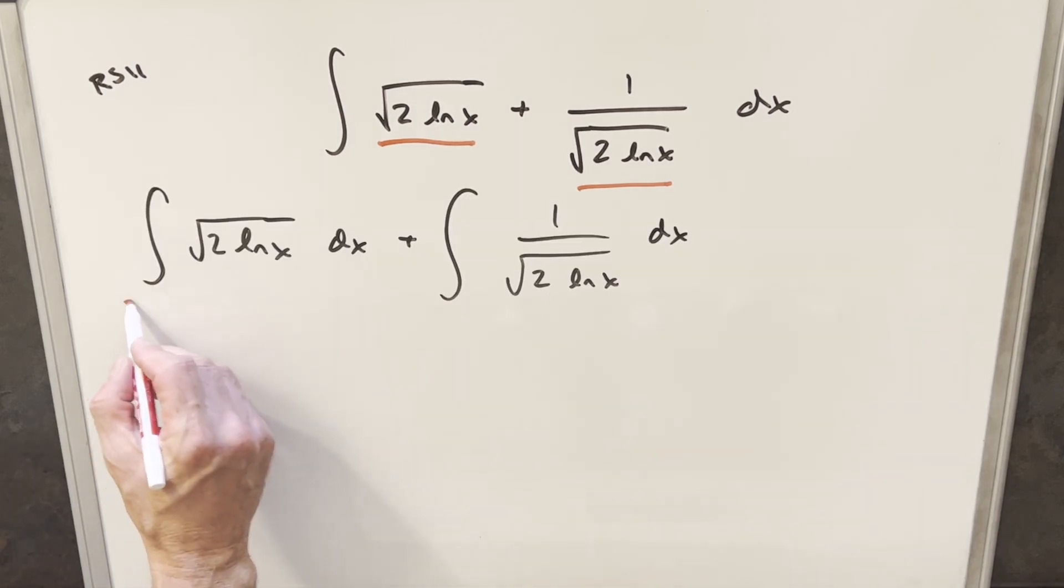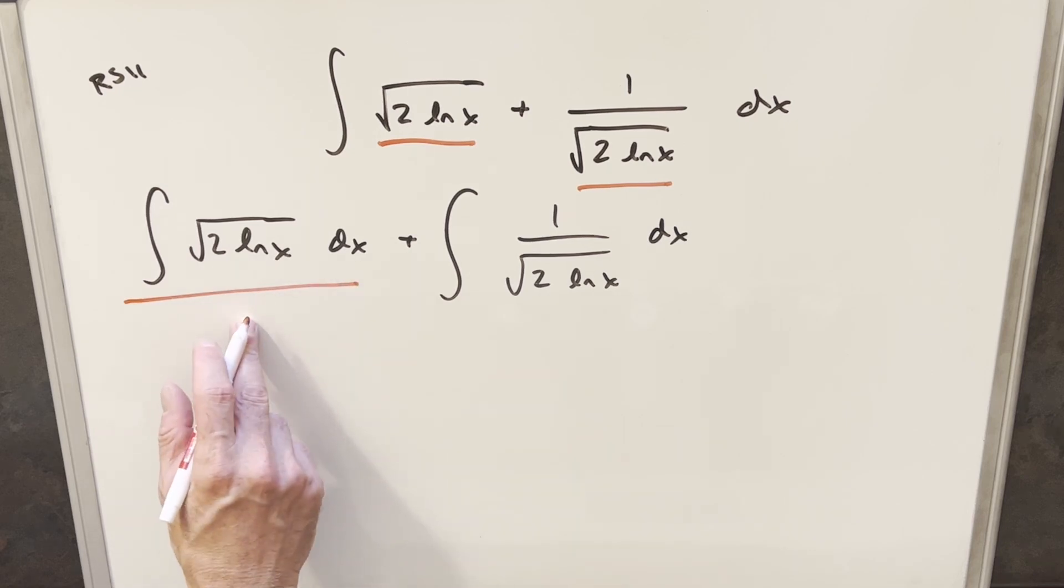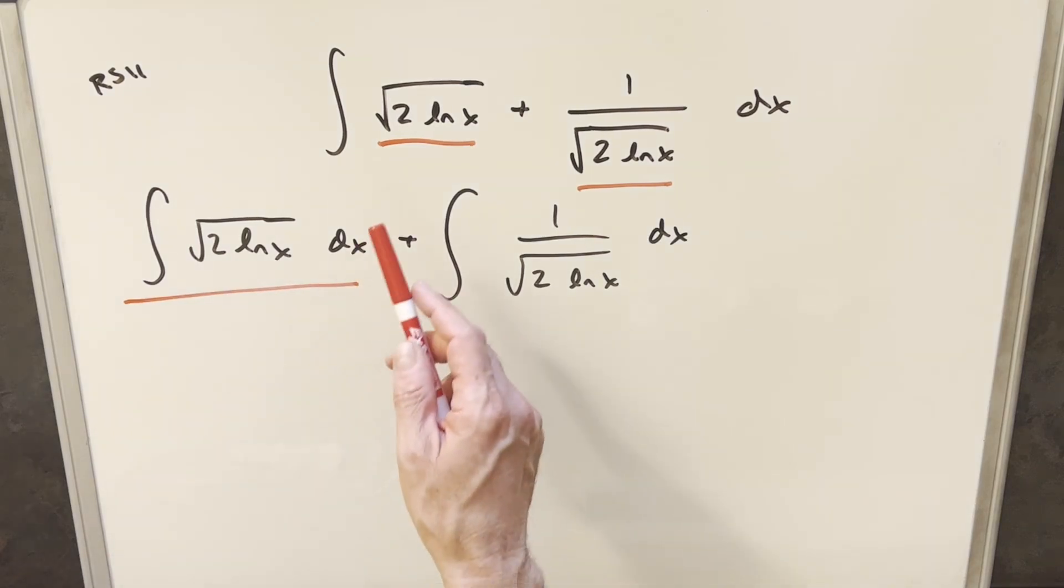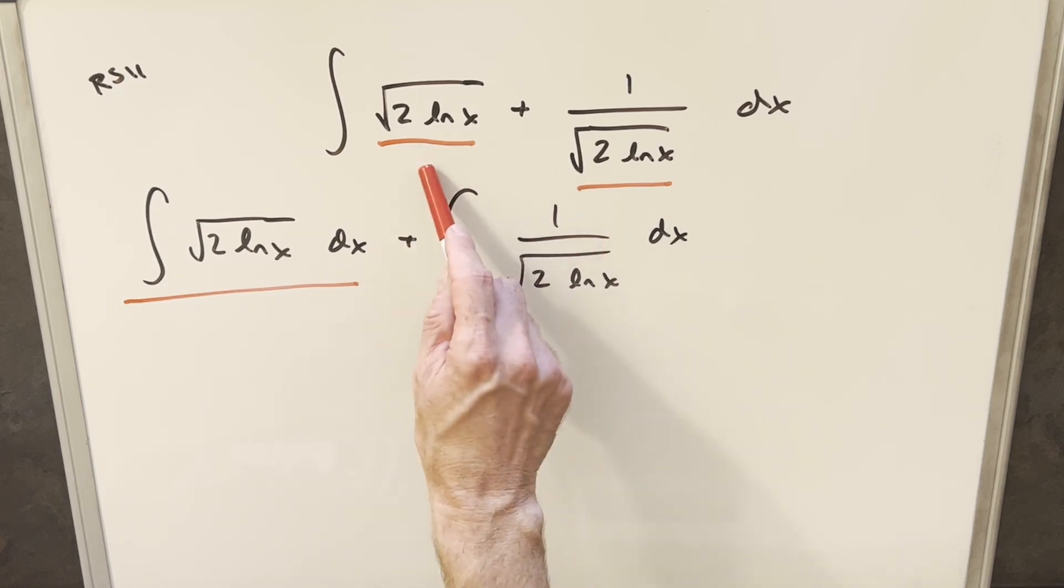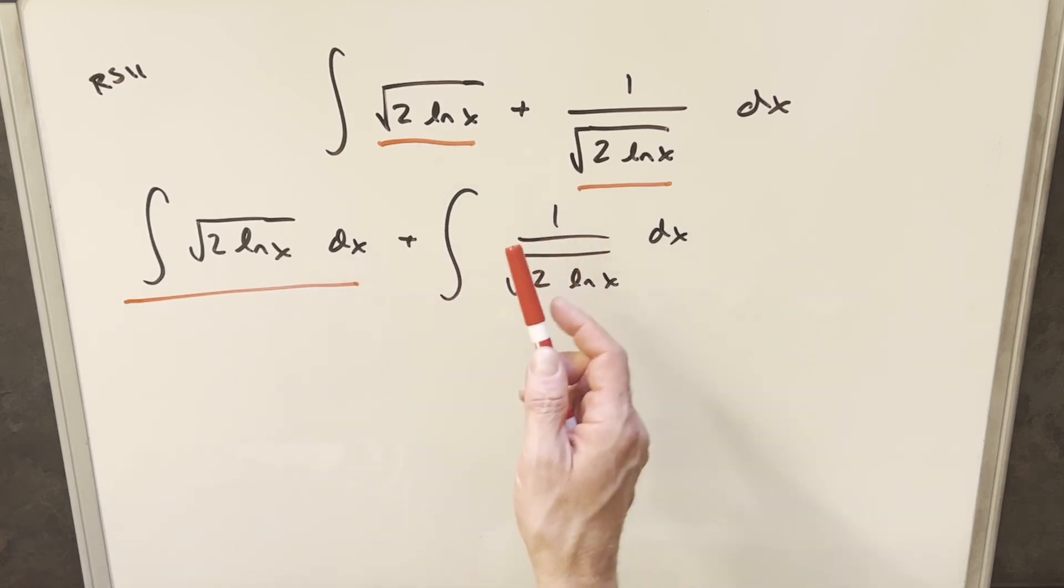Okay, so I'm going to start with this left integral and do integration by parts on this one. This is motivated by the fact that I'm thinking this is the derivative of this or close to it. So this is like a reverse product rule situation. And in those cases, integration by parts is usually going to work out really nice.